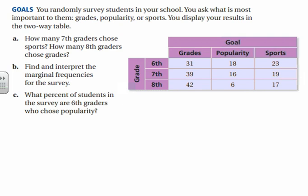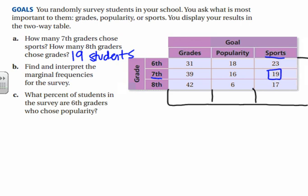The next example has three different categories for each surveyed item. You asked the whole school what was most important: grades, popularity, or sports, and made a table from that. The question asks how many seventh graders chose sports. We'll find our marginal frequencies by adding boxes below and to the side. After filling those in, both the marginal frequency column and row add up to 211, confirming all values are correct.